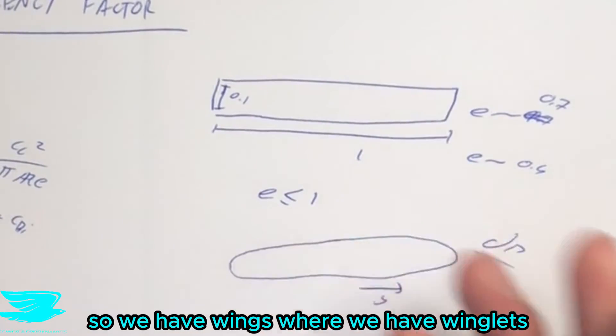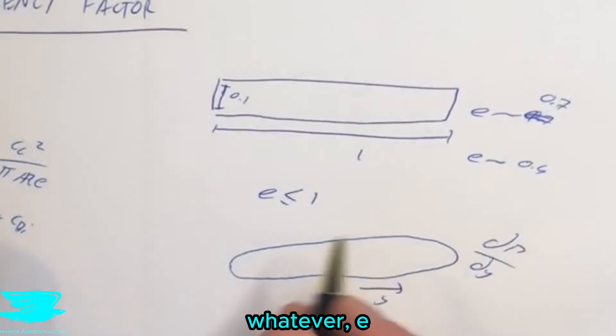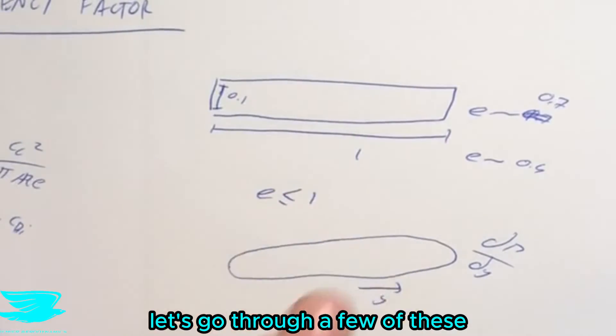But that doesn't mean that we can only get a maximum of one. If we go to non-planar wings, so we have wings where we have wing tips or they bend or they're a complete box shape, whatever, E does change. Let's go through a few of these because they're really cool to see.